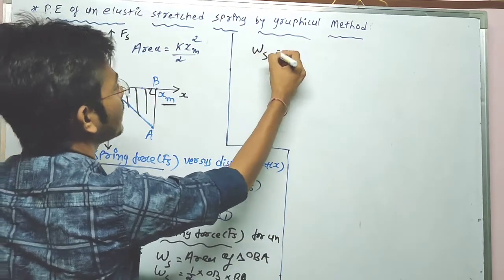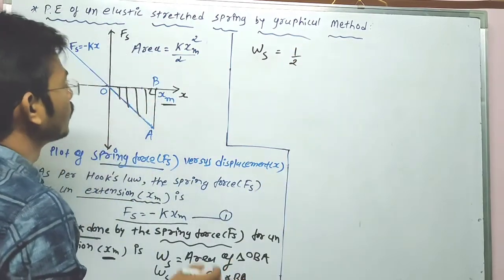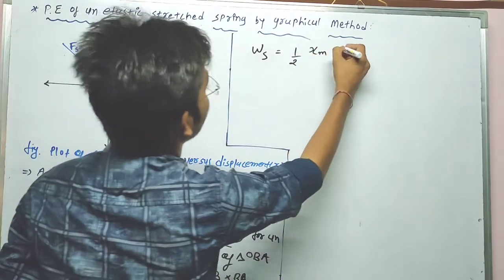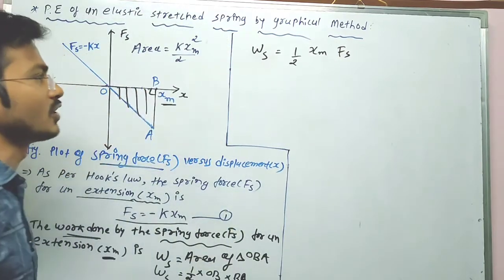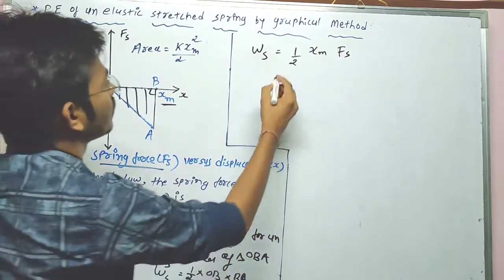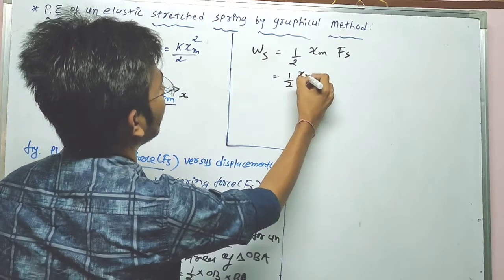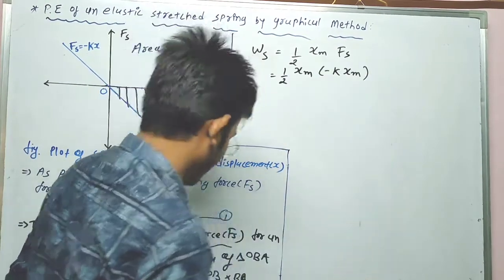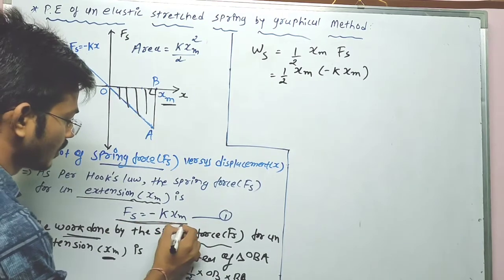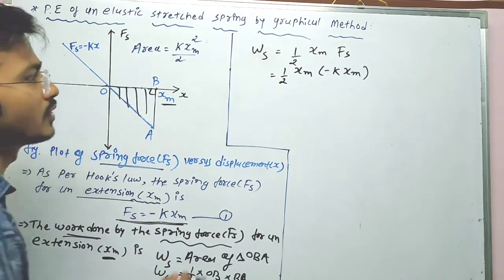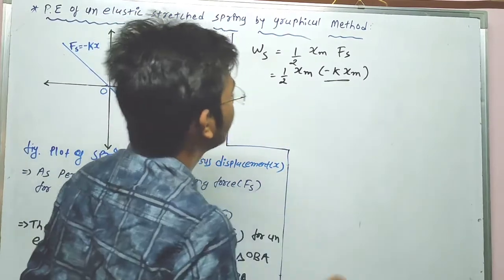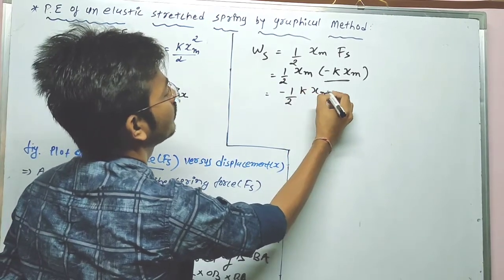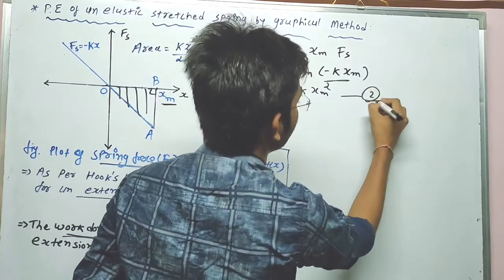Now putting in all the values: work done Ws is equal to one-half times xm times Fs. The value of Fs from equation number one is minus k into xm. Substituting this, Ws equals one-half times xm times minus k times xm, which gives Ws equal to minus one-half k xm squared. This is our equation number two.